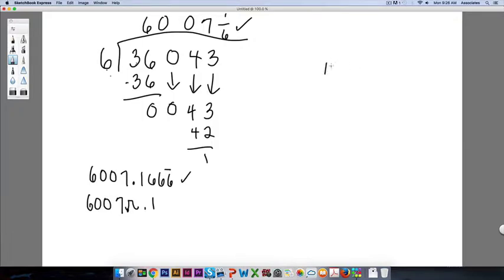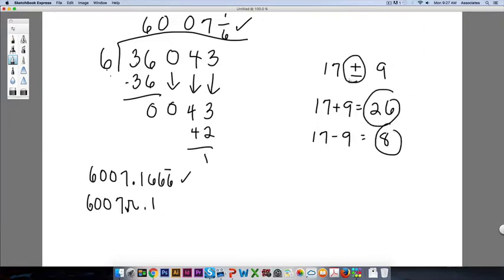Problem two says 17 plus or minus 9. This symbol is read as plus or minus nine. So what it means is you break this down into two problems. You do 17 plus 9 which is 26, and 17 minus 9 which is 8. These are the two answers. This symbol requires two answers.